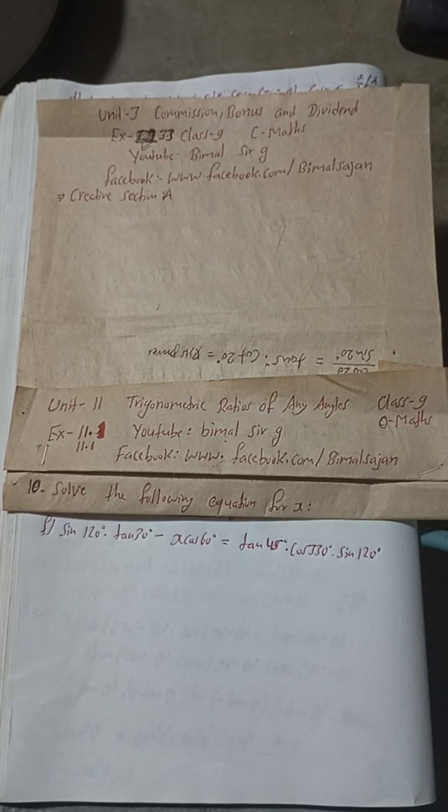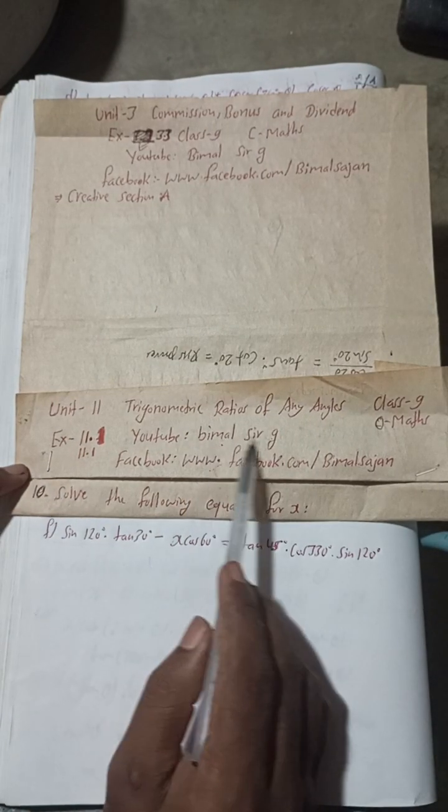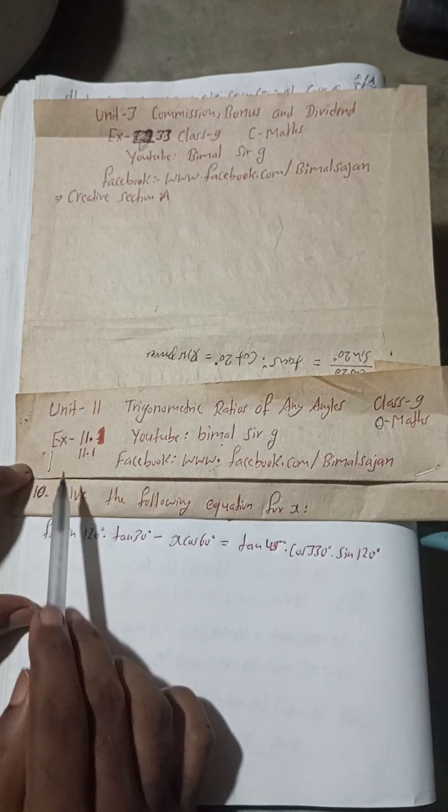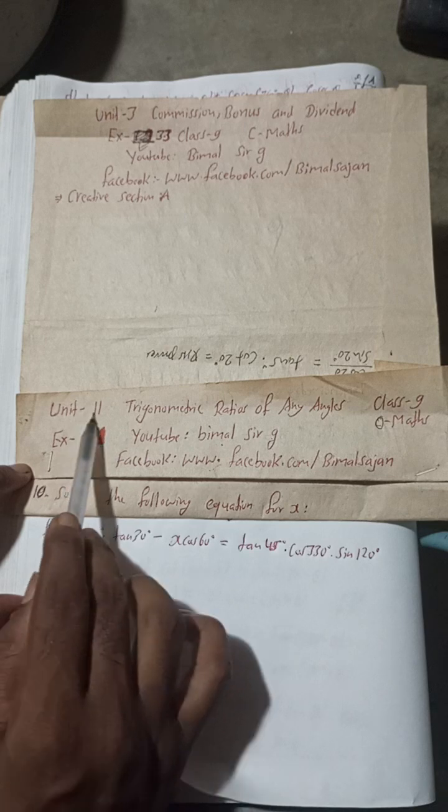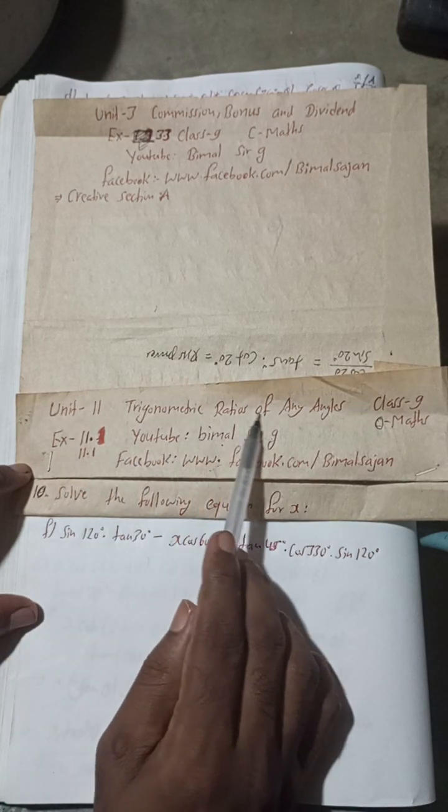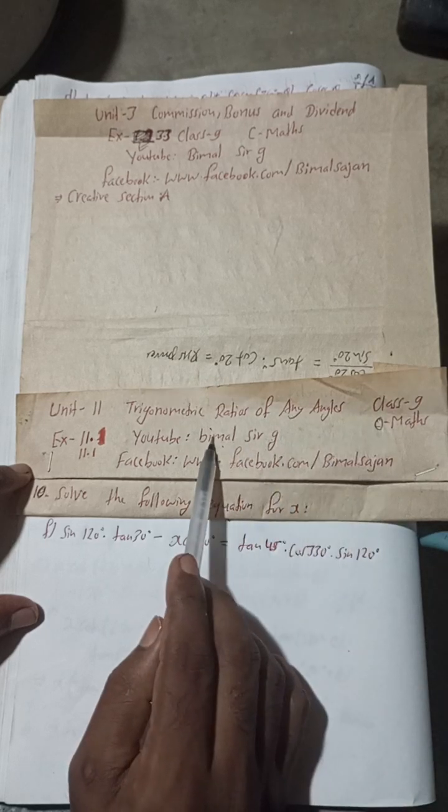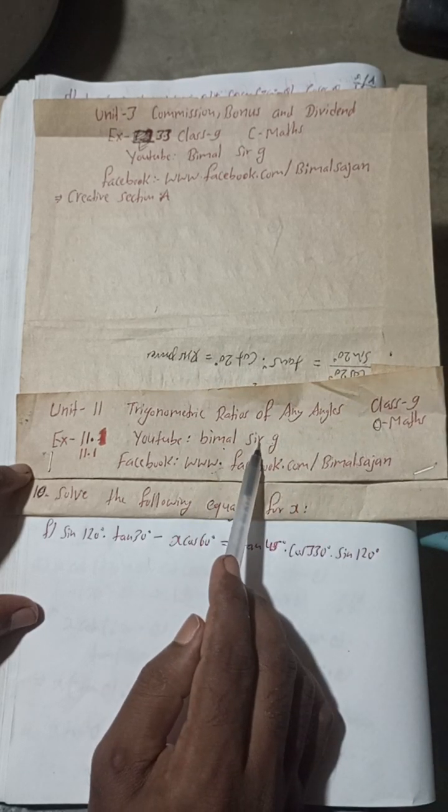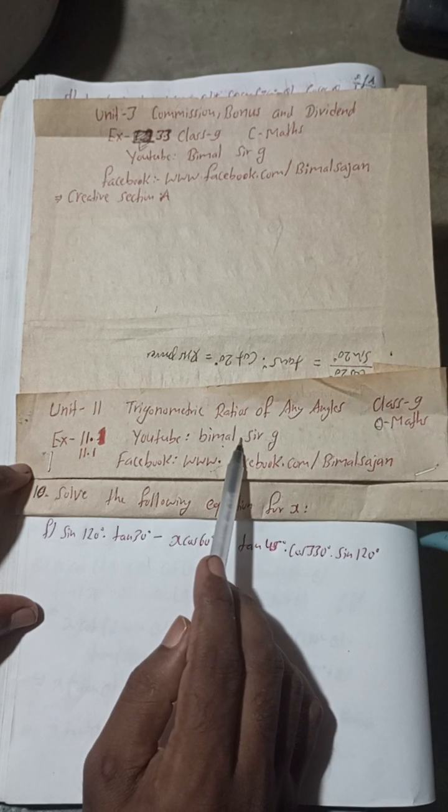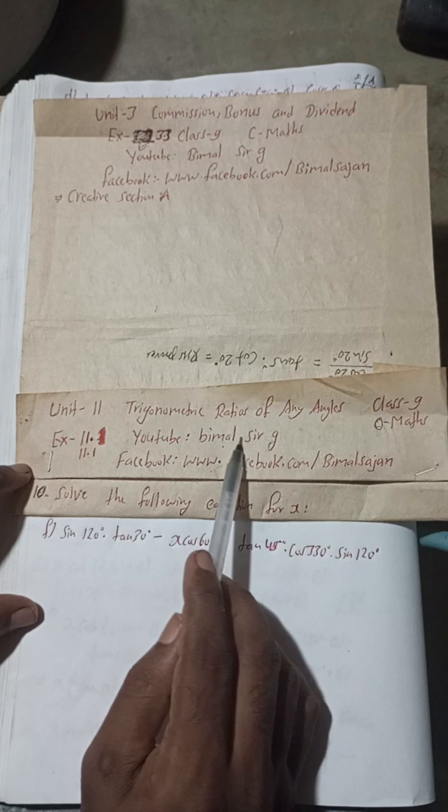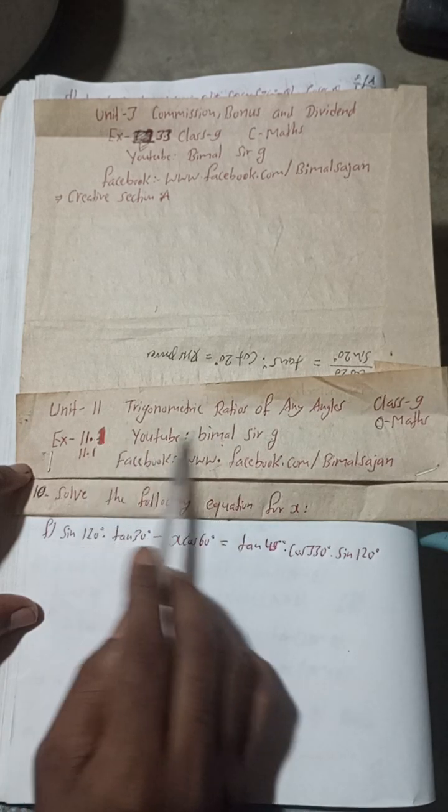Radhe Radhe Jaya Sri Krishna. Class 9 and 10 students, welcome back to Bimal Sarji YouTube channel. This is question number 10f, exercise 11.1, unit 11 trigonometric ratios of any angles, class 9 optional maths. If you check this playlist of Bimal Sarji YouTube channel, then you can find there class 9 and 10 optional maths, compulsory maths, and science reasoning parts in this playlist.